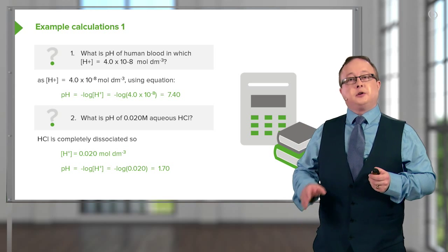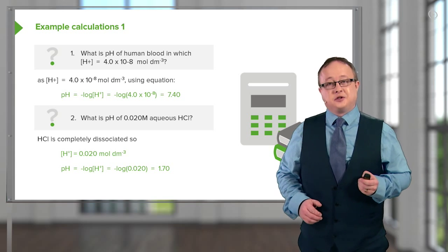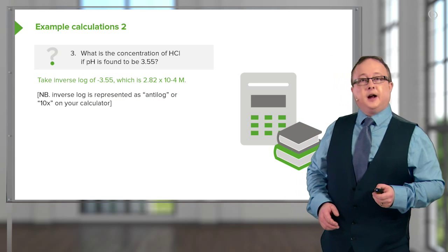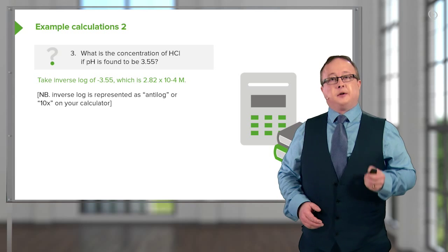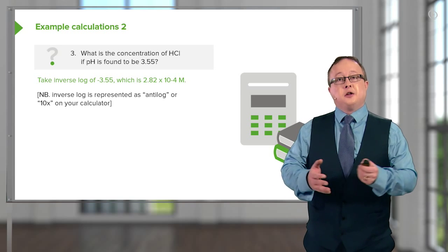Generating a solution, which of course is a lot more acidic than 7.4, which we had in the earlier question. Now, let's look at it in a bit more depth. What happens if we have a concentration of hydrochloric acid and the pH is found to be 3.55?